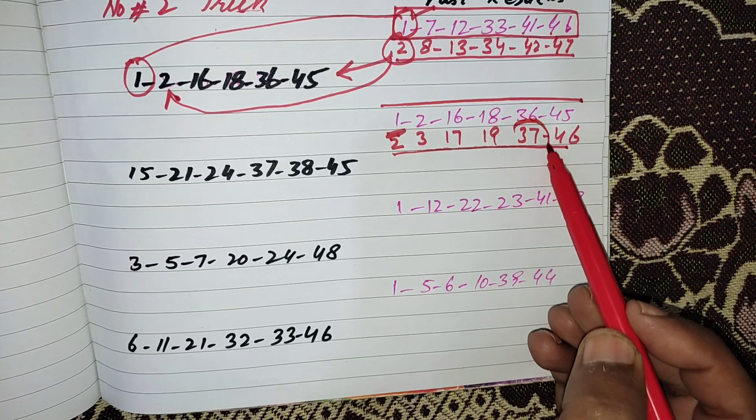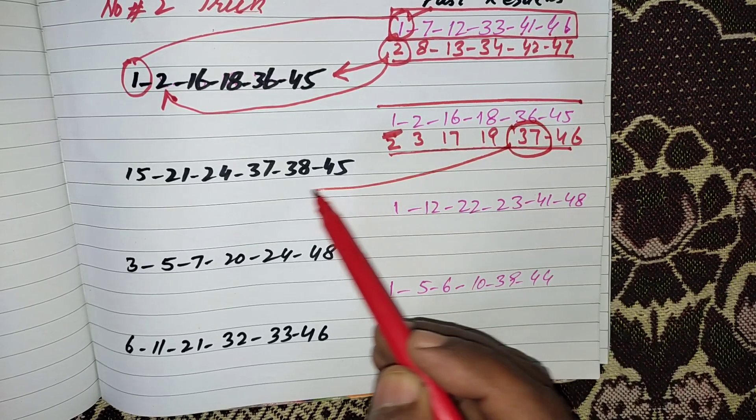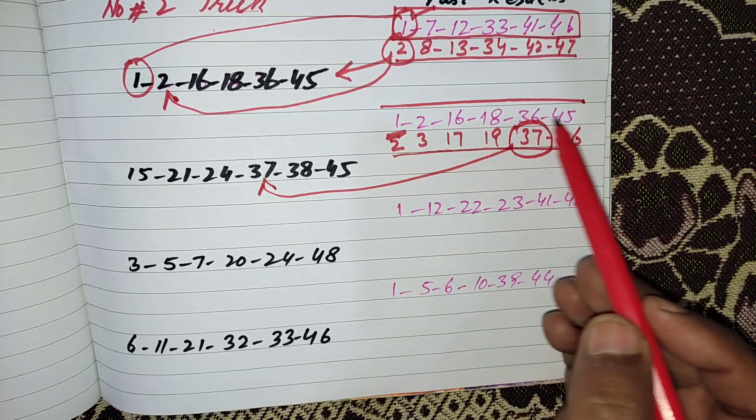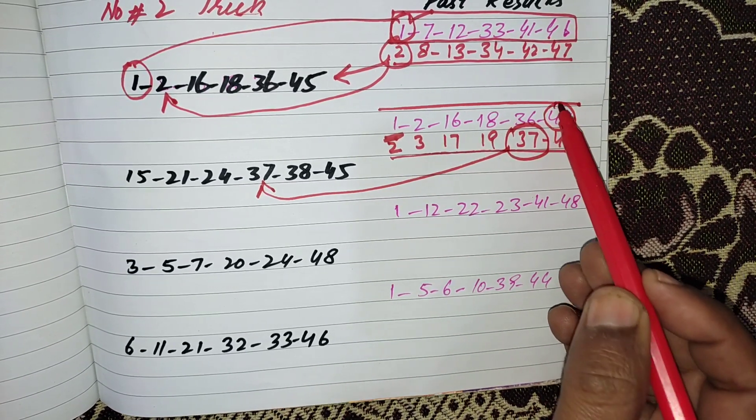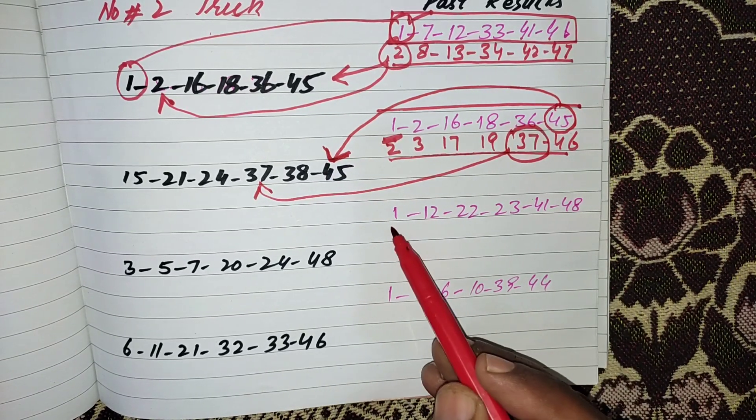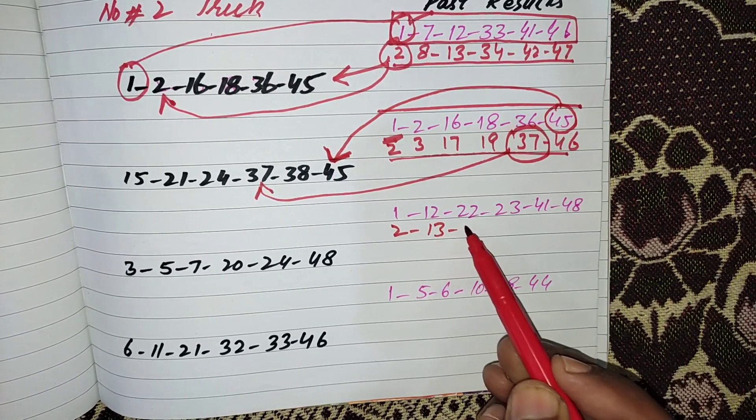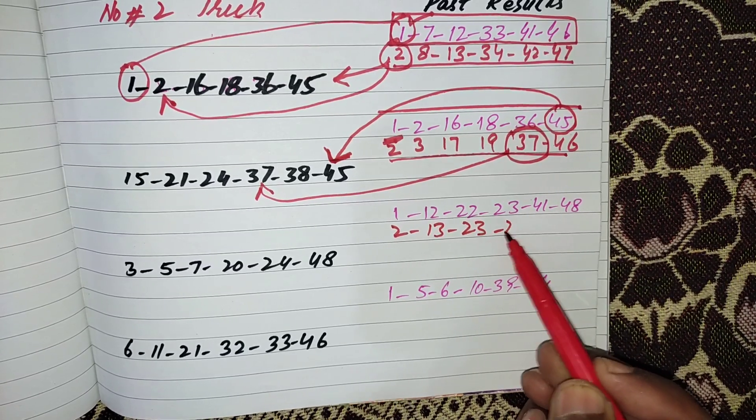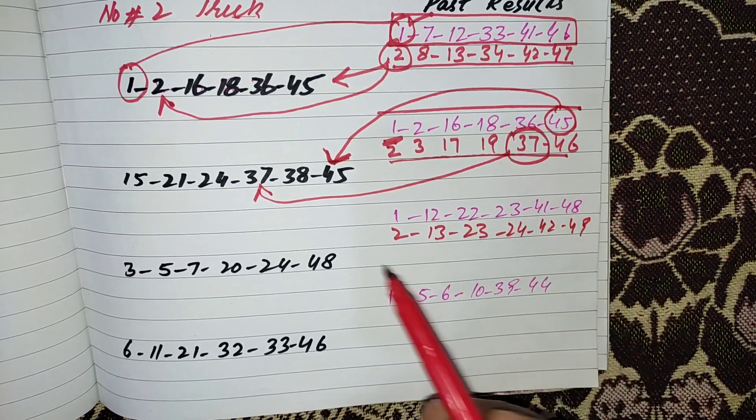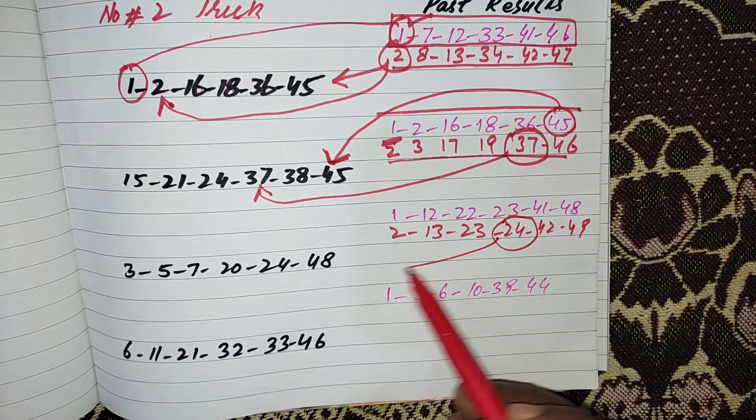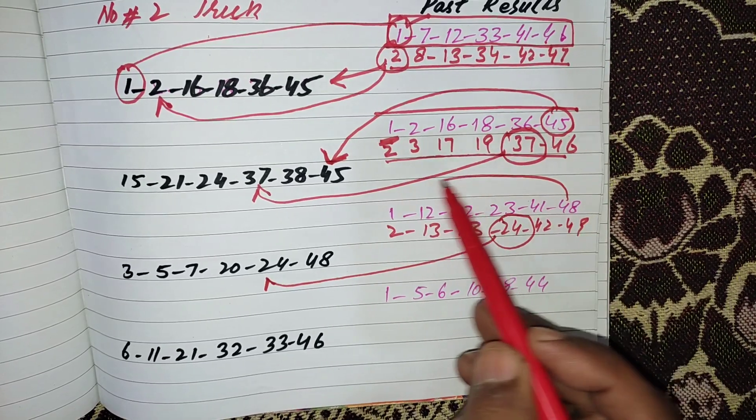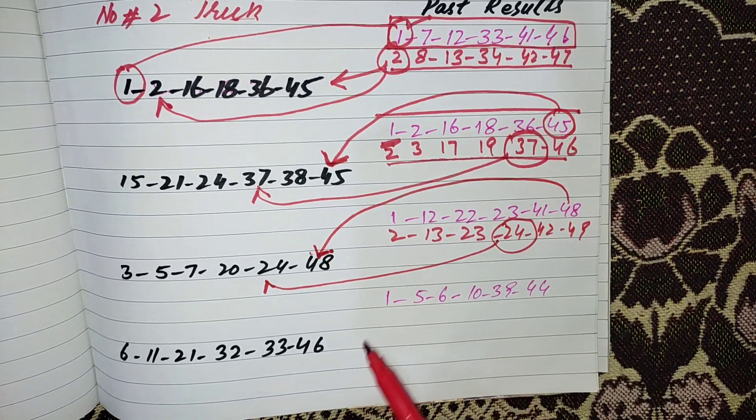You can see the 37 number was came, and from here the 45 number was repeat. 2, 13, 23, 24, 42, and 49. 24 number came from here and 48 number came from here.